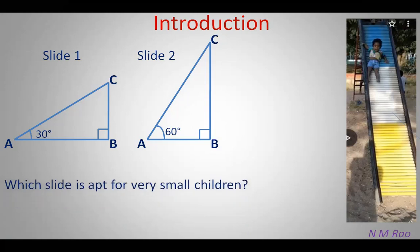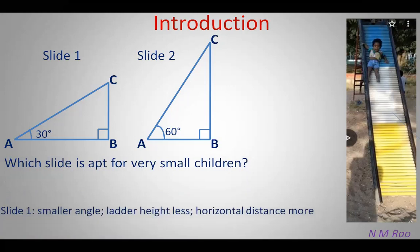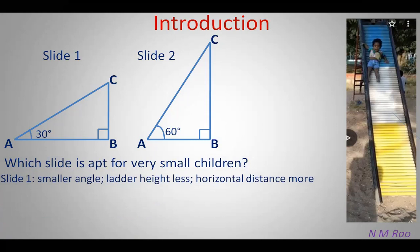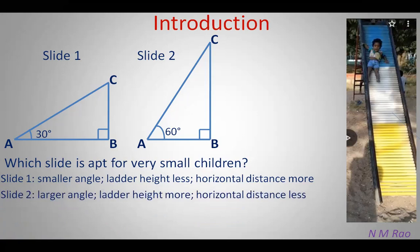Now can you guess which slide is more apt for very small children? In slide 1, angle BAC is smaller, so the height of the ladder is also less and the horizontal distance is more. So it is apt for small children to climb easily and to slide slowly, as the slope is less when compared to slide 2. In slide 2, the angle is increased, so the ladder height is more and horizontal distance is less. So it is not easy to climb, but big children can slide fast as the slope is more when compared to slide 1.